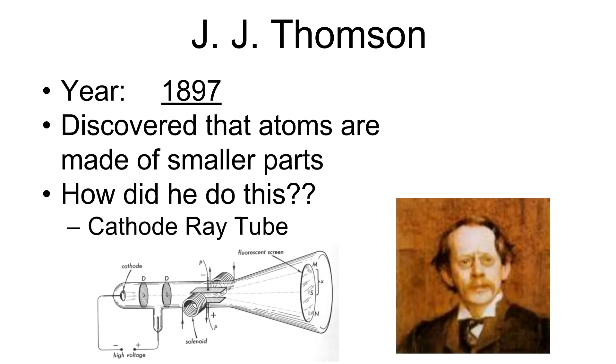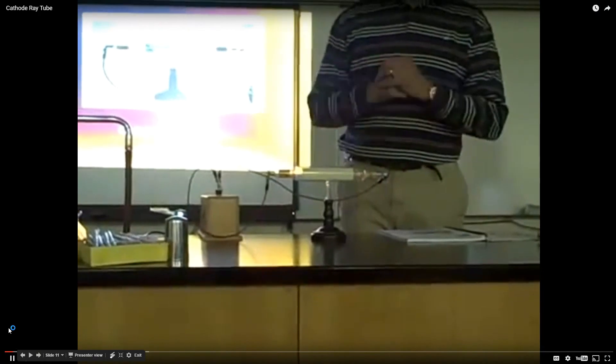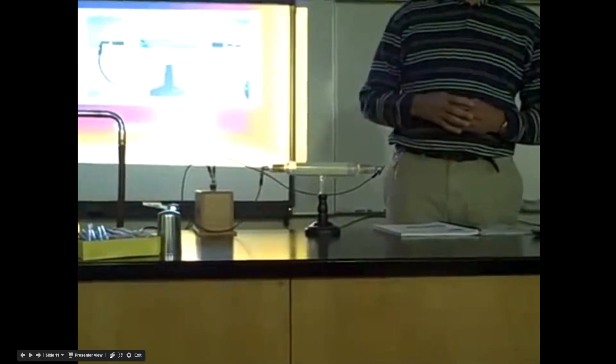About a hundred years later, J.J. Thompson comes along and uses a device called a cathode ray tube to make discoveries about the atom. Let's take a look at what this is. This is a cathode ray tube—essentially a vacuum chamber. There are no gases inside this glass tube. The only things we have are two electrodes: one called the cathode, the other the anode, and a fluorescent screen in the background.